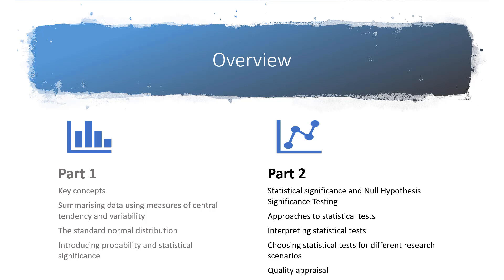In Part 2 we're going to be building on that, particularly statistical significance, in something called a null hypothesis significance testing framework. We're going to look at the different approaches to statistical testing and how you might choose between those based on different research scenarios, how to interpret statistical tests — recognising it's not all about statistical significance — and we'll also look at quality appraisal in quantitative research, thinking about how we can judge whether statistics from a piece of research are quality or not.